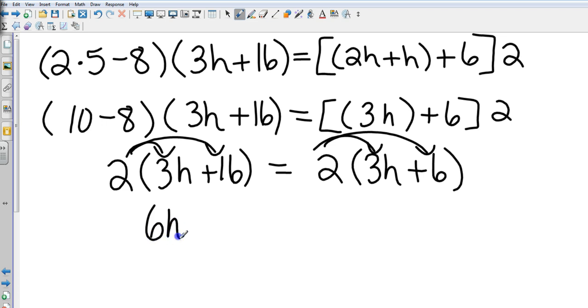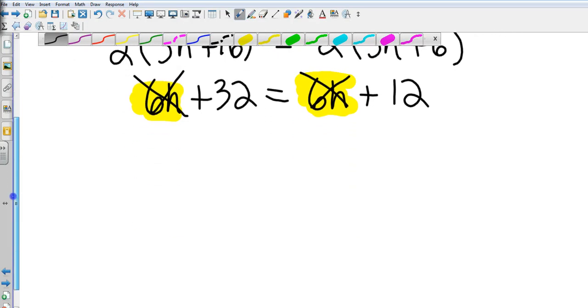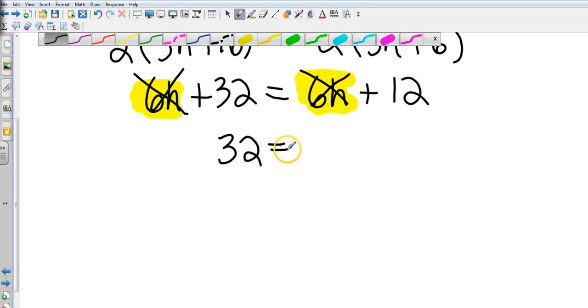That gives me 6h plus 48—oh excuse me, not 48, that's going to be 32. Good call. Then I multiply over here: 2 times 3h is going to give me 6h plus 12. Now what do you see? I see the exact same variable on both sides. Because they are both the same, I just eliminate them and I come up with an answer of 32 equals 12, which is absolutely false.